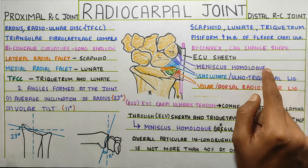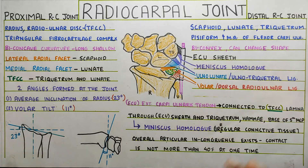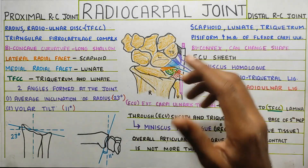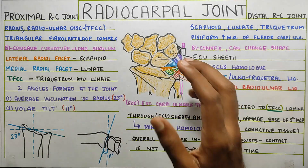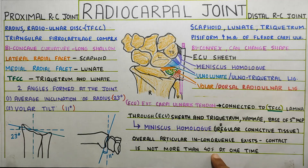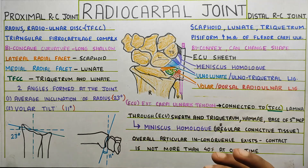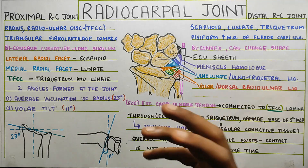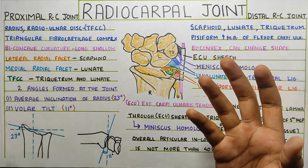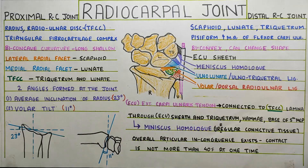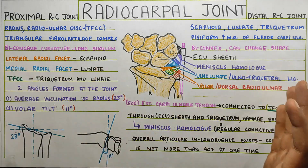This irregular connective tissue in this region, with all the ligaments, is called the meniscus homolog. Overall, the articular surface is very incongruent and the contact between your proximal and distal joint surfaces is not more than 40%, somewhere around 20 to 40%, because of this irregularity. But that again helps in getting movement at the joint and makes the joint more complex.